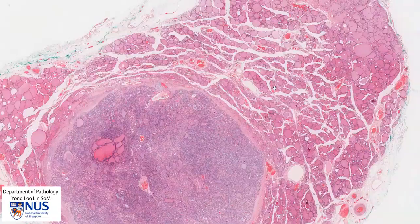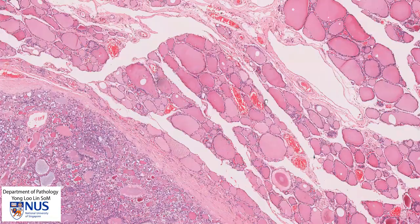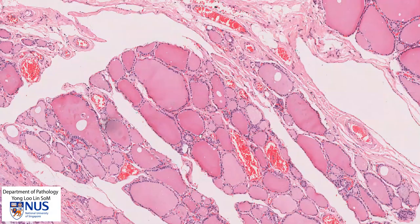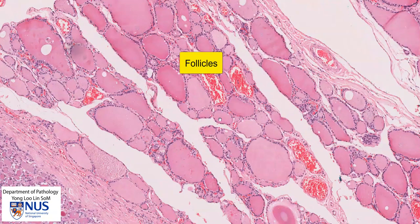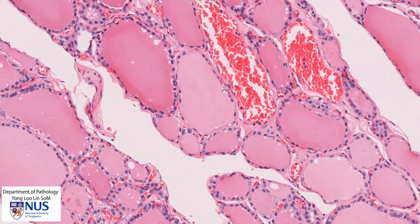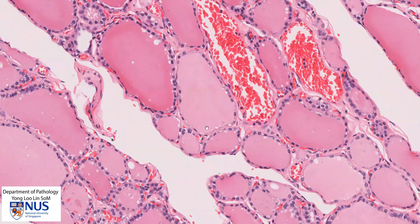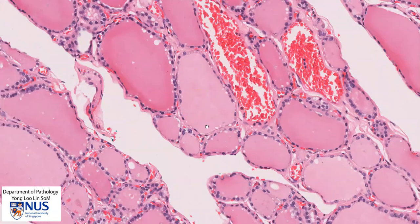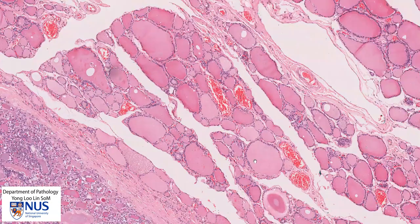Let's do a very quick recap on thyroid histology first. Looking at this normal area, we can see that there are many of these rounded structures of different sizes, and we call these follicles. The follicles are lined by cuboidal cells with rounded, very bland, uniform nuclei, and the cells are quite well spaced apart. Within the follicles, we see this pinkish fluid known as colloid. Here we can see a blood vessel. So in the non-neoplastic thyroid gland, the follicles vary in size quite a bit.